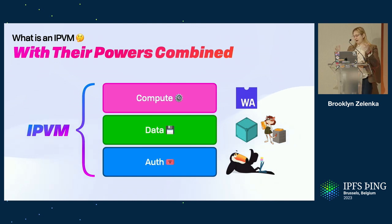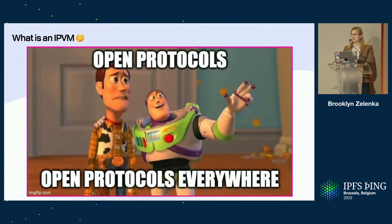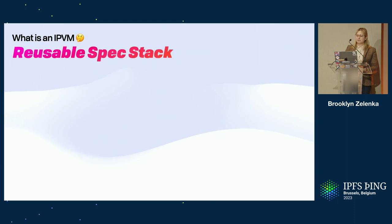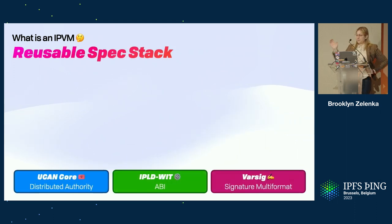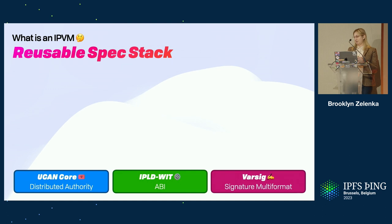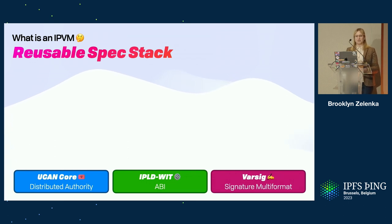When we started looking at the specs for how to actually glue these parts together, we realized that a lot of it could be extracted out — you don't have to buy into the entire stack. If you just want the invocations, you can pull that one part out. We wanted a generalized multi-format signature, so we actually pulled that out into its own spec. Specs to date include UCAN core for transmitting access to particular resources, IPLD-WIT as an ABI layer, and varsig — a general multi-format for signatures. We would have called it multisig, but the name was already taken, so it's now varsig, and that lives in the Chain Agnostic Standards Alliance.